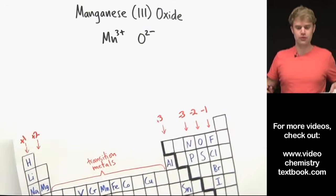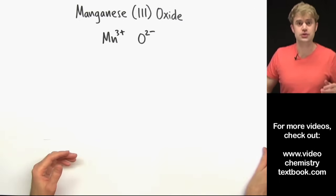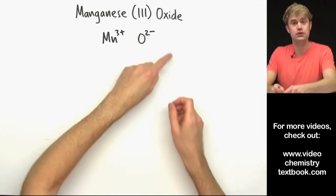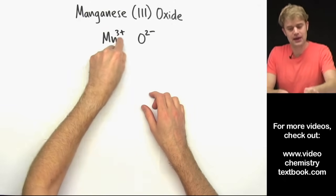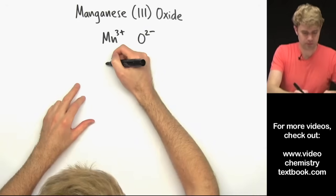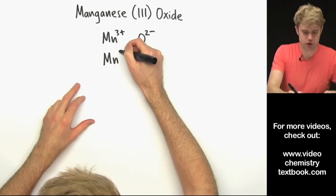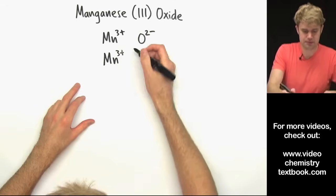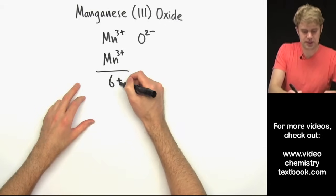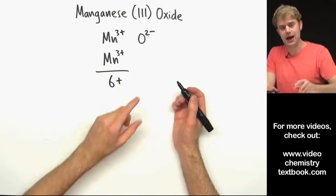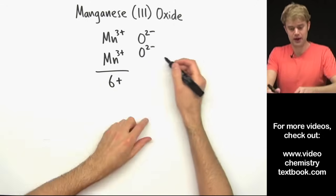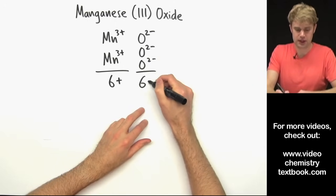So we've got Mn3 plus and O2 minus. We want to add one or more of these elements so that the charges cancel. Now when we have a 3 and a 2 there's a little strategy here that you might know. So to get the charges to balance we add another one of these manganese and now we have 3 plus and 3 plus so we have a total of 6 plus on this side. And to balance that with the oxides we add another for 4 minus and then we add another for 6 minus.